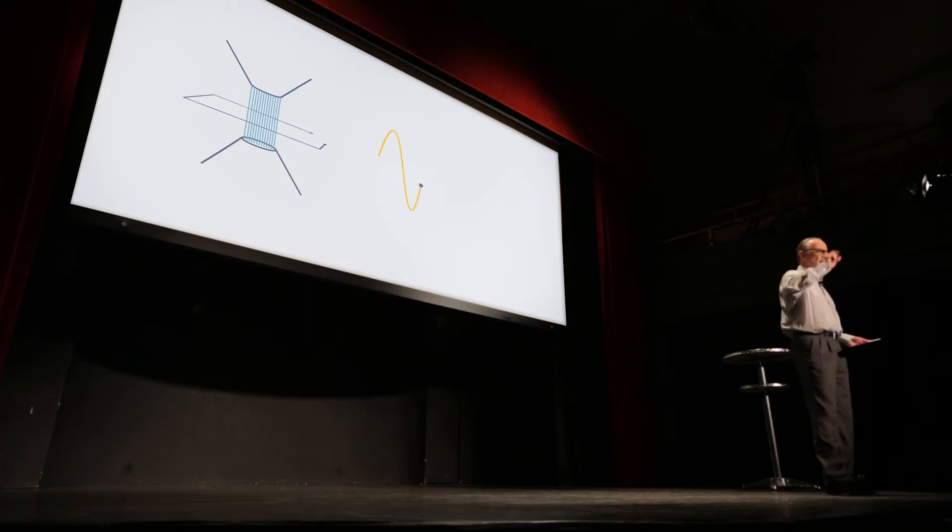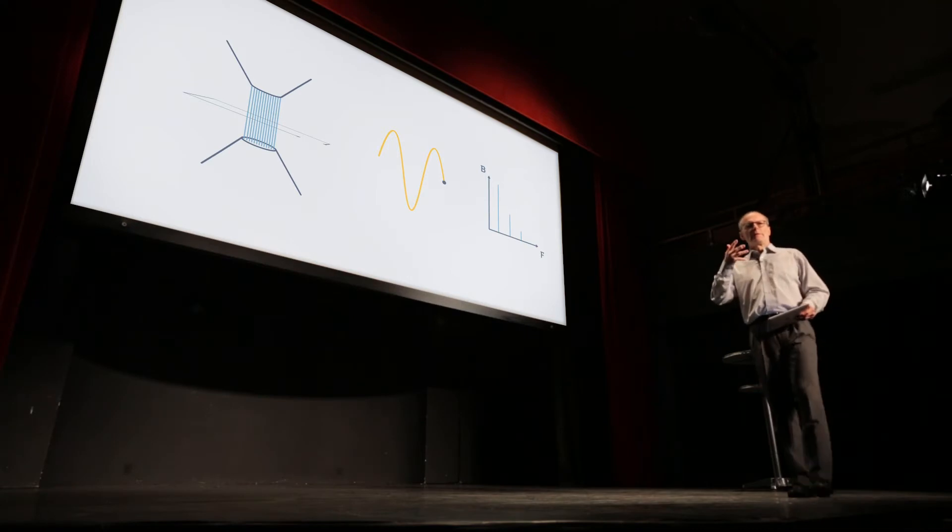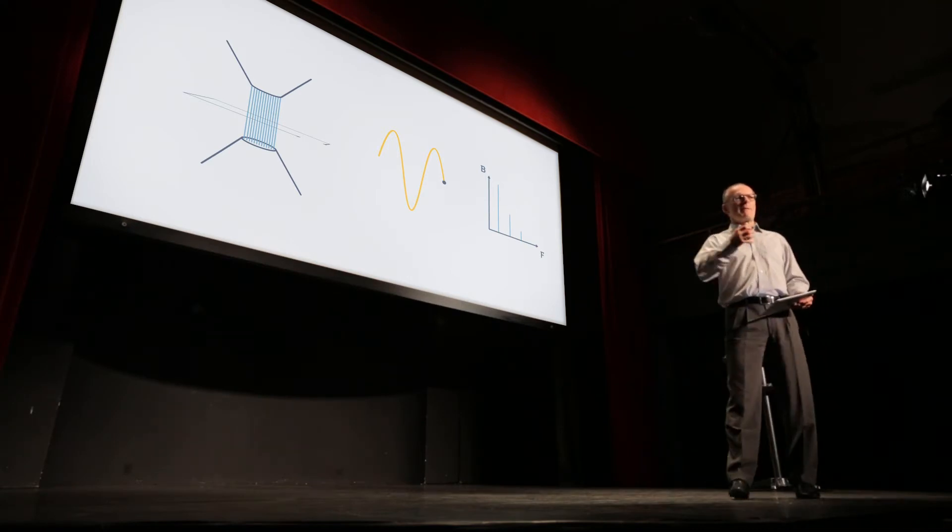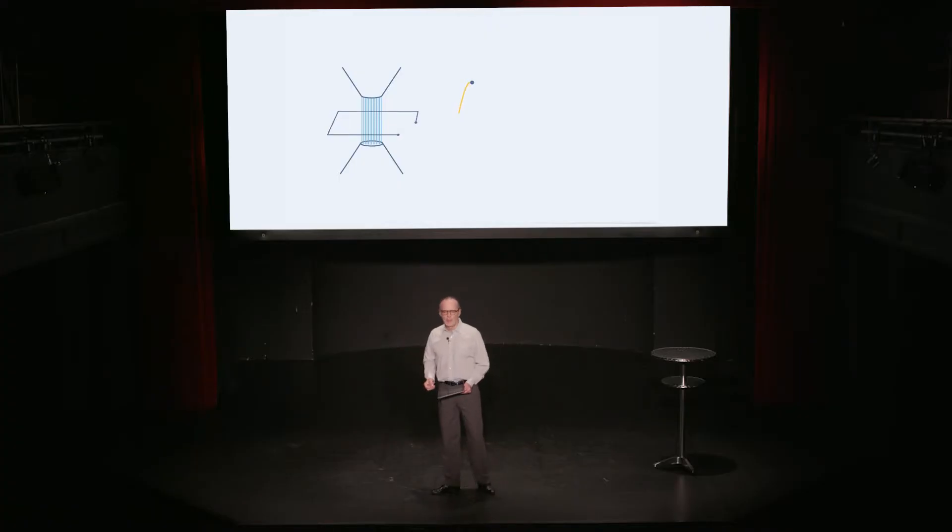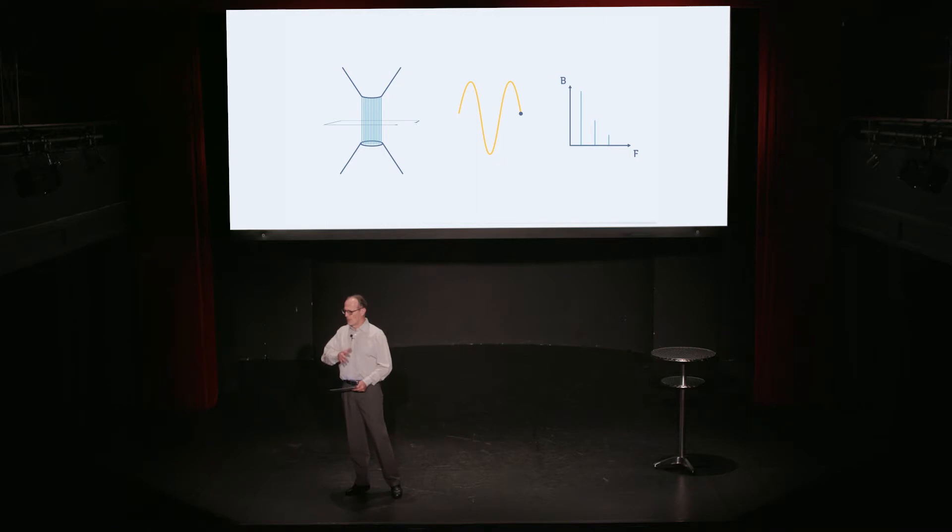By taking a Fourier transform of these measurements, we calculate a multipole model for this particular magnet. The first order one, which is just the sine wave, is the dipole component. How does this magnet bend the beam? The second component is the quadrupole moment, which tells us how this magnet focuses the beam, and so forth. Often, scientists measure up to 17th, 18th order to be able to include all the effects that this magnet will have on the beam.